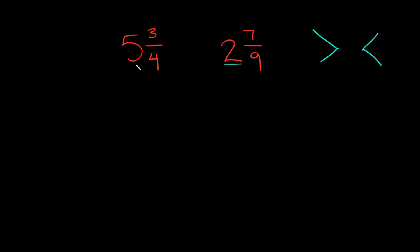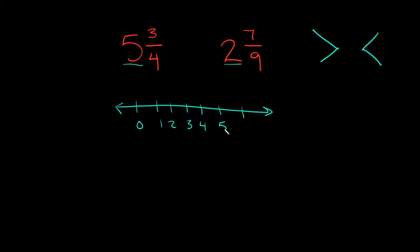Here we have two and here we have five. If I wanted to plot these on a number line — just a really rough sketch — we'd have zero, one, two, three, four, five, six. Two and seven-ninths would be somewhere between two and three, maybe around there. And then five and three-fourths would be somewhere between five and six, because we start at five — that's our whole number — and then move over three-fourths, which would be approximately here.